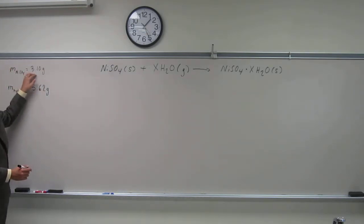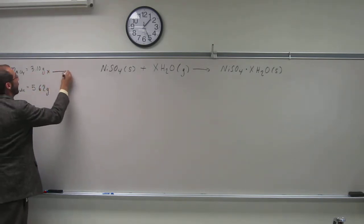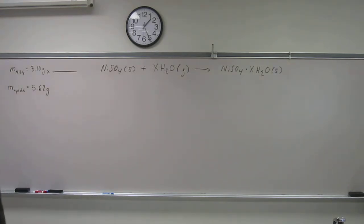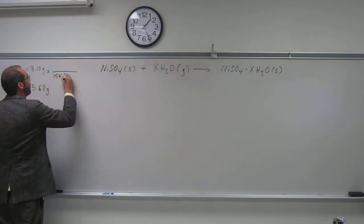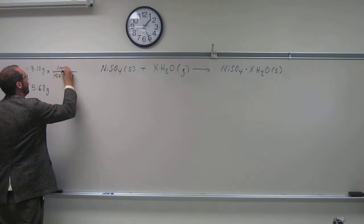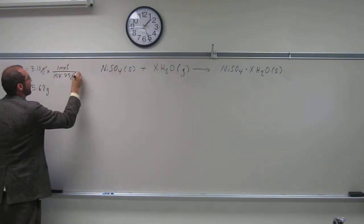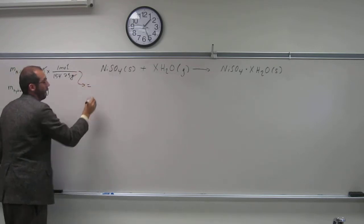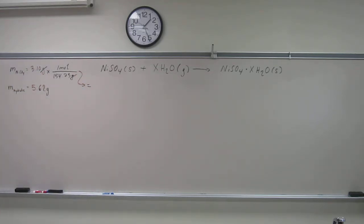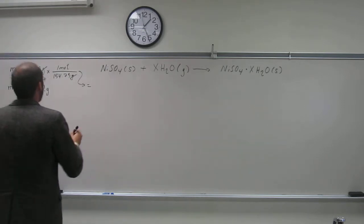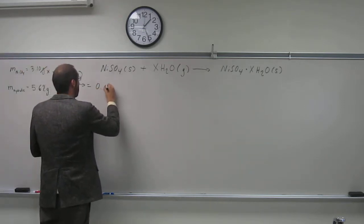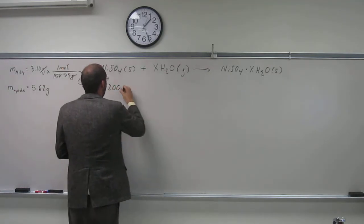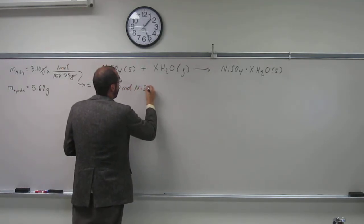What do we need to do? We need to figure out how many moles of nickel(II) sulfate we've got to start out with. I calculated the molar mass of this earlier. What did we get? 154.73. So 3.10 grams of NiSO4 times 1 mole over 154.73 grams, cancel that out. I get 0.0200 moles of nickel(II) sulfate.